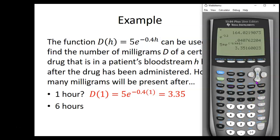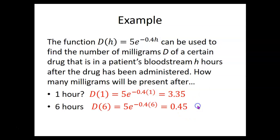And what about after six hours? We plug in six for h. We're evaluating five times e to the, in parentheses, negative 0.4 times six, close parentheses. That shows up on the calculator as 0.453589 and so on, so if you round to a couple places after the decimal point it's about 0.45.